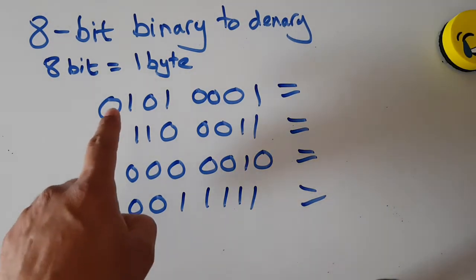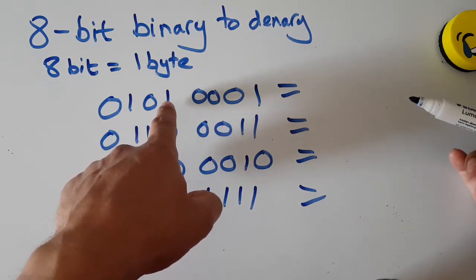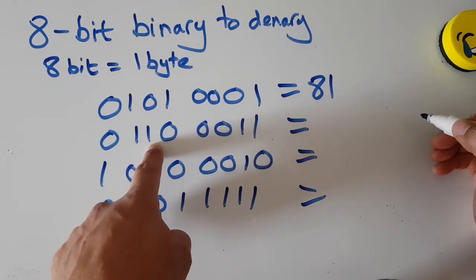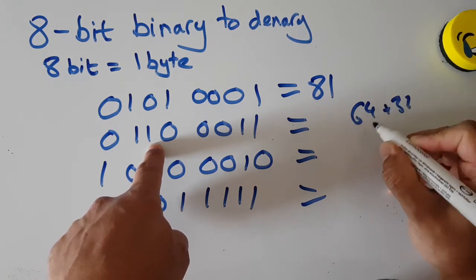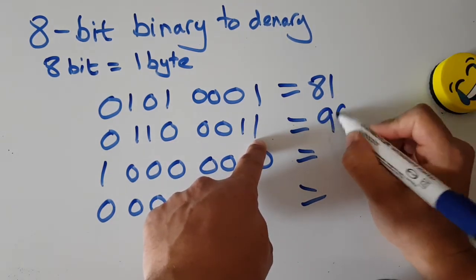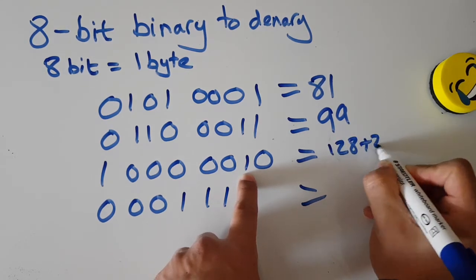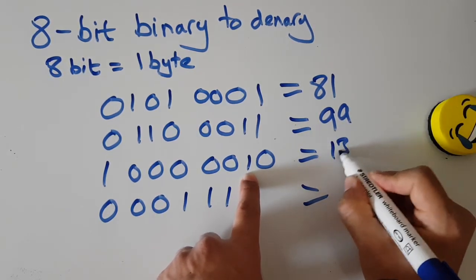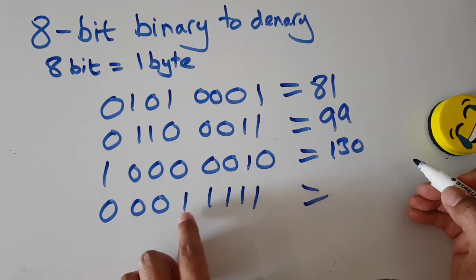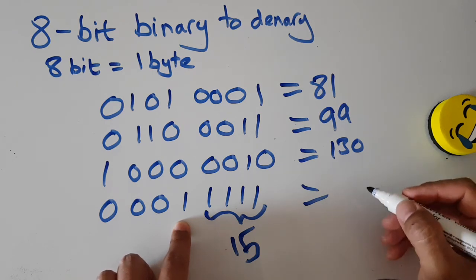The first one: 128, 64, plus 16 and 1 — that is 81. The next: 64 plus 32 is 96, plus a few more — that's 99. Then 128 switched on plus 2 is 130. And the last one: 16 plus 15 — after a while you memorize that the lower four bits all on is 15 — so 15 plus 16 is 31.